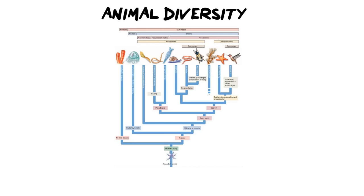Hi everybody, and welcome back. Today we're going to be looking into animal diversity. In this video, I'm going to cover the different ways in which we allocate subdivisions of animals — how we look at their symmetry, their body tissue layers, and their coeloms — and then we're going to look at the specifics of the major animal groups.